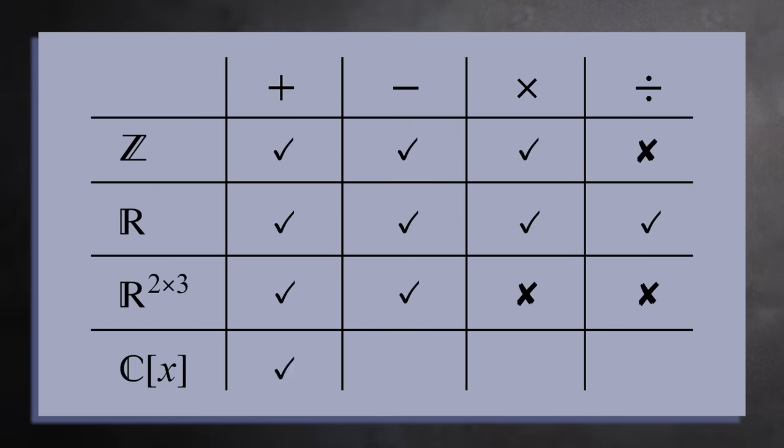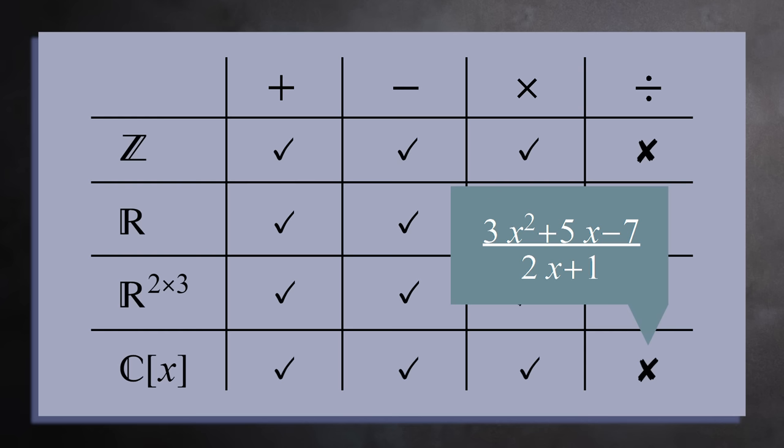And finally you can add, subtract, and multiply any two polynomials and you'll get another polynomial. But if you divide one by another you usually get a rational function, which is not a polynomial. The elements in the set of polynomials only have three of the four operations.